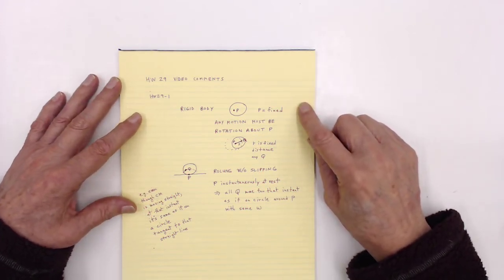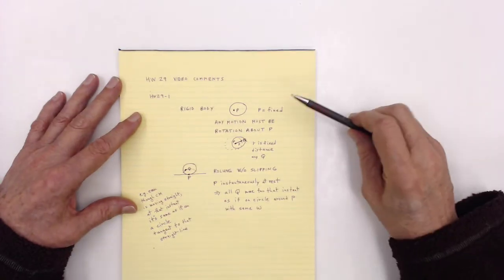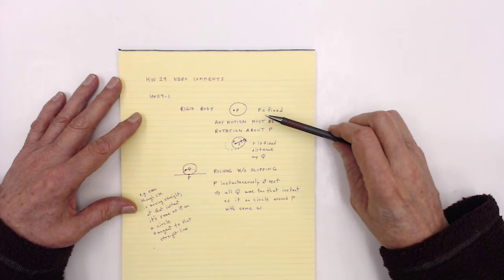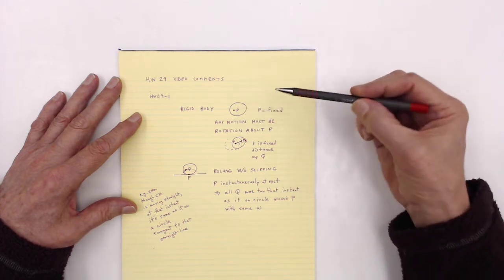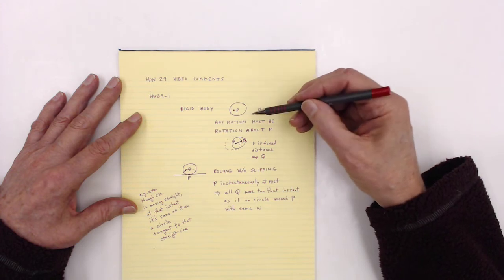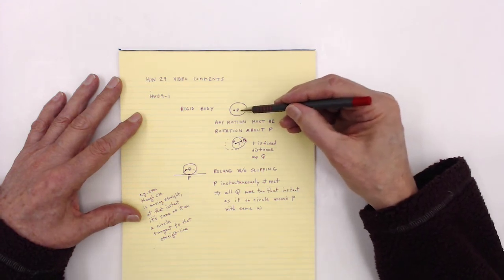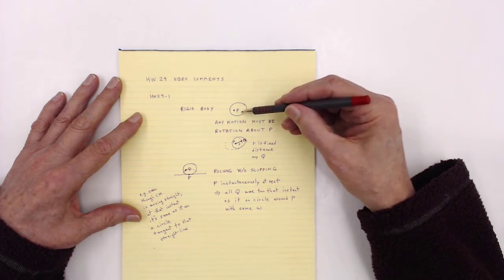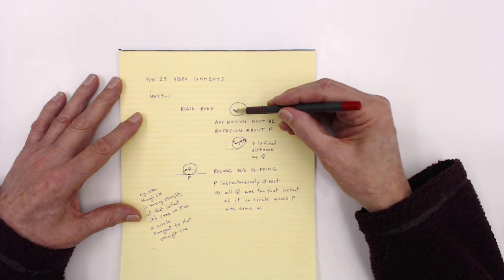Homework 29-1. I wanted to just elaborate on something that I mentioned in lecture about rigid bodies. If you have a rigid body and you fix some point in it, some point P, then any motion must, in fact, be looked at as a rotation around P. It's restricted to being a rotation around P.